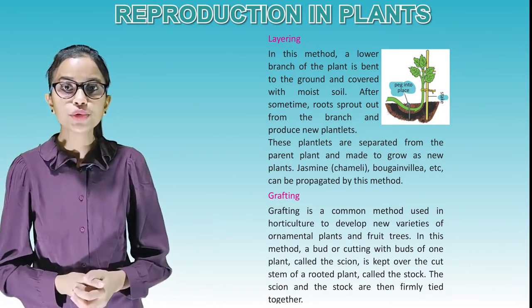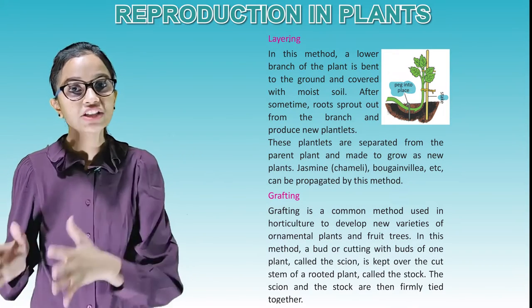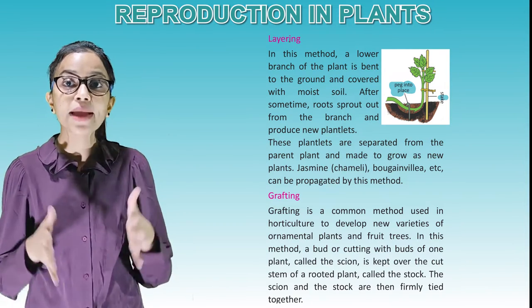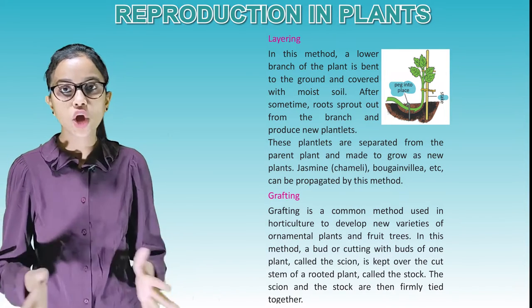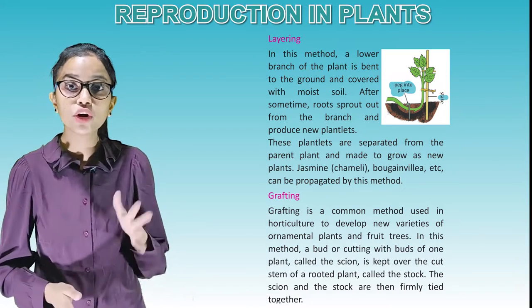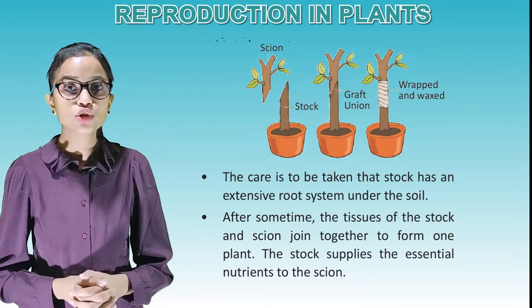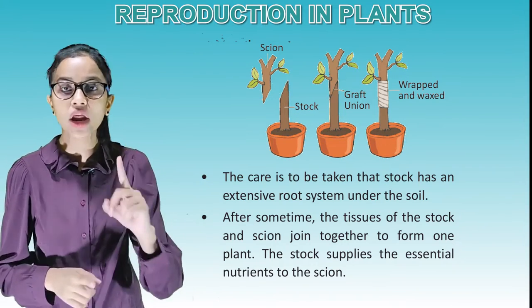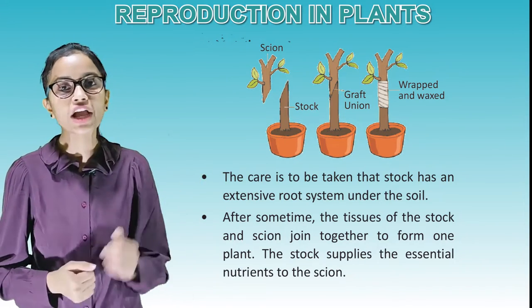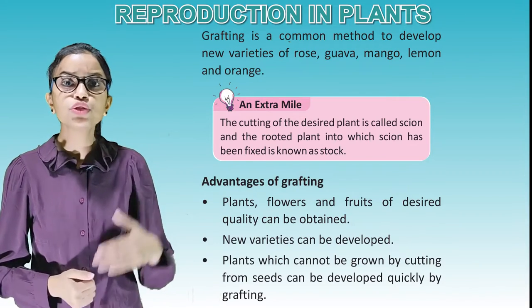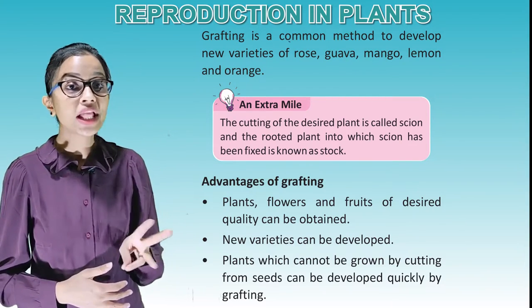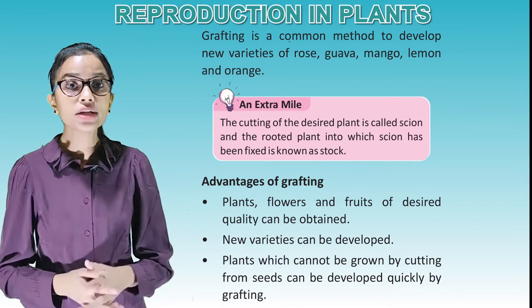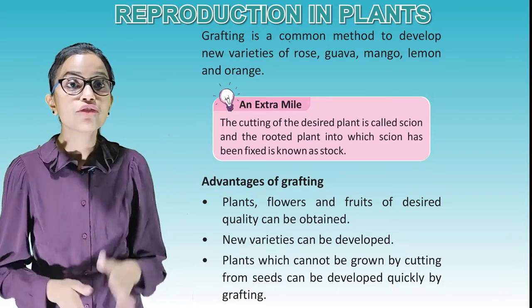Grafting: Grafting is a common method used in horticulture to develop new varieties of ornamental plants and fruit trees. In this method, a bud or cutting with buds of one plant called the scion is placed over the cut stem of a rooted plant called the stock. The scion and the stock are then firmly tied together, ensuring the stock has an extensive root system. After some time, the tissues of the stock and scion join together to form one plant. The stock supplies essential nutrients to the scion. Grafting is used to develop new varieties of rose, guava, mango, lemon and orange. The cutting of the desired plant is called the scion, and the rooted plant into which the scion is fixed is known as the stock.